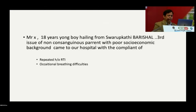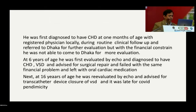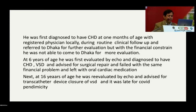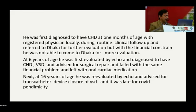My case: an 18-year-old male from Swarupkati, Barisal, third child of non-consanguineous parents with poor socioeconomic background, presenting with recurrent respiratory tract infections and occasional breathing difficulty. He was first diagnosed with congenital heart disease at one month of age but financial constraints prevented follow-up in Dhaka. At six years of age, he was diagnosed with VSD and advised surgical repair — again unsuccessful due to financial problems. At 16 years, he was re-evaluated and advised for transcatheter device closure, but this was delayed due to COVID-19.